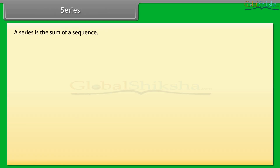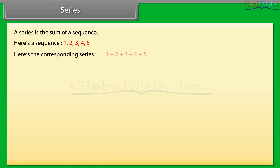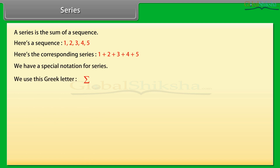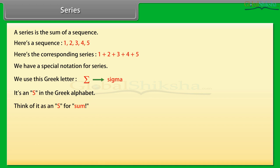A series is the sum of a sequence. Here is a sequence: 1, 2, 3, 4, 5. Here is the corresponding series: 1 + 2 + 3 + 4 + 5. We have a special notation for series — we use the Greek letter sigma, which is an S in the Greek alphabet. Think of it as S for sum. Our series adds 5 terms: 1 + 2 + 3 + 4 + 5.